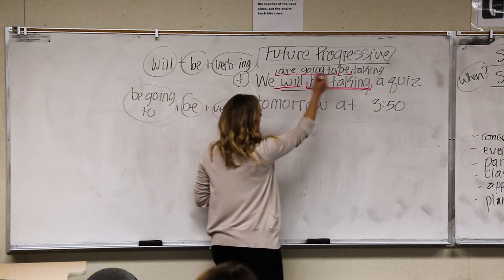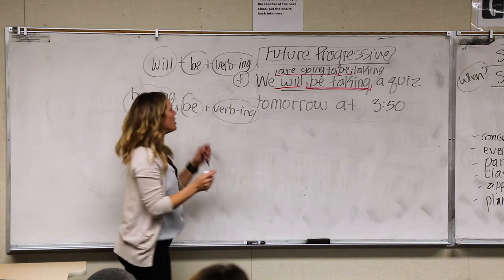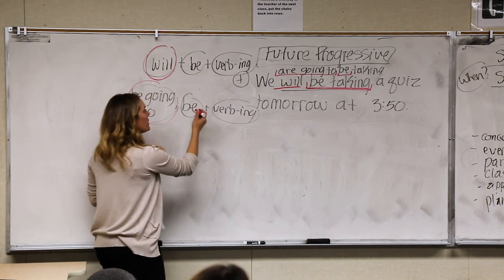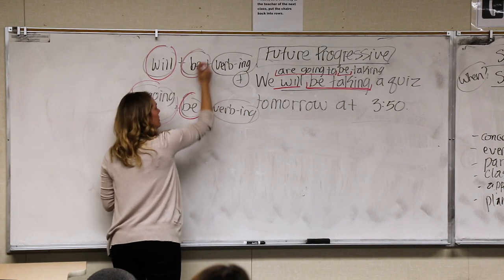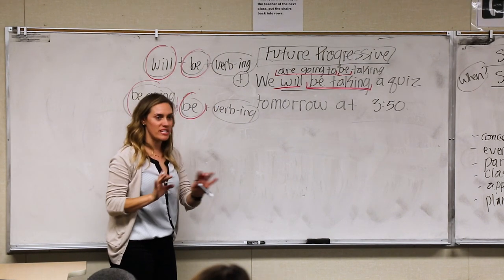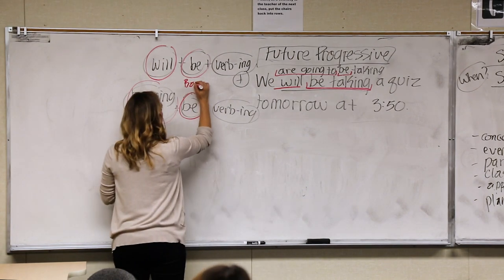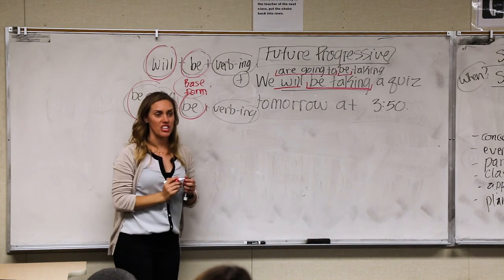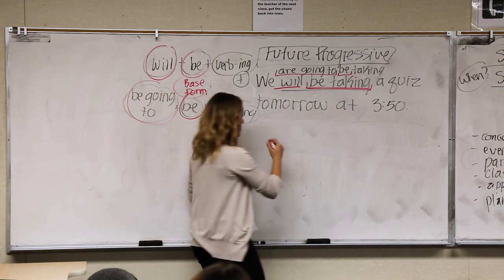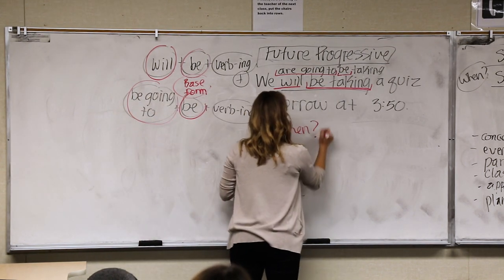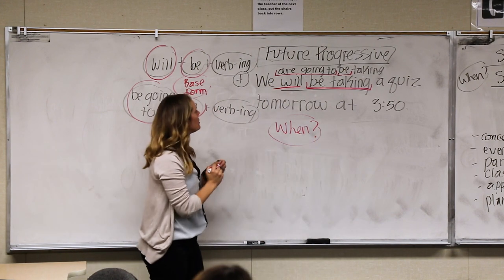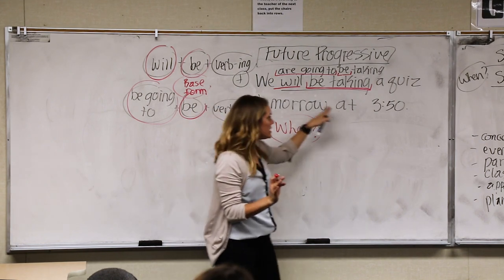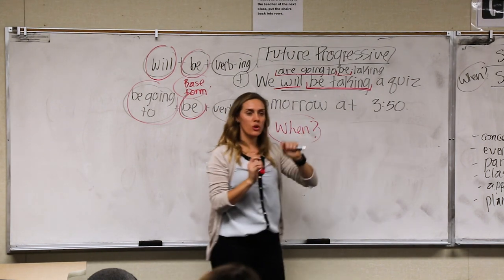So: 'We will be taking' — this is the future progressive. You just need to know it's will or be going to, plus be — always base form, don't change it — plus verb-ing.